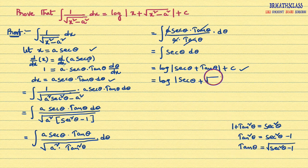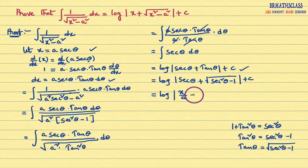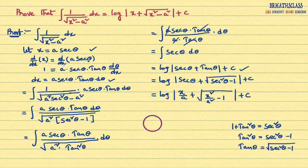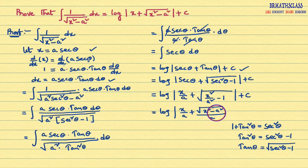So tan theta can be written as root over secant squared theta minus 1. We considered in the beginning that x equal to a secant theta, so secant theta equals x divided by a. Therefore secant squared theta equals x squared by a squared. Substituting, we get log mod (x over a) plus root over (x squared by a squared minus 1) plus c.